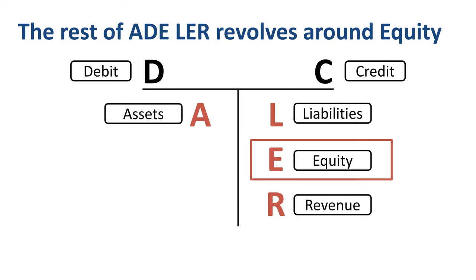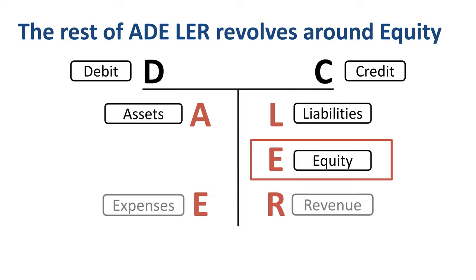However, in order to earn that revenue, companies incur expenses. The normal balance for an expense is a debit. This is directly connected to the fact that if companies incur expenses, then the shareholders get hurt by this and equity goes down. In reality, it is the difference between revenue and expenses that shareholders look at. If revenues are bigger than expenses, then the company makes a profit and equity increases. If revenues are smaller than expenses, then the company makes a loss and equity decreases.